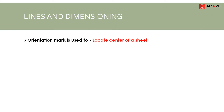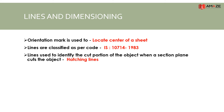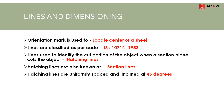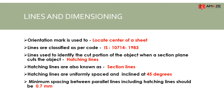Next is lines and dimensioning — these are important points. Lines are classified as per IS code 10714-1983. Hatching lines are section lines used for cut portions. Hatching lines are uniformly spaced and inclined at an angle of 45 degrees. The minimum spacing between parallel lines, including hatching lines, is 0.7 mm.